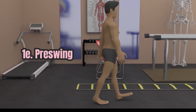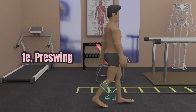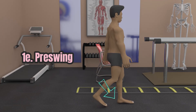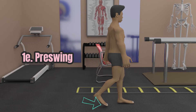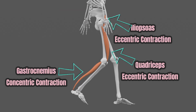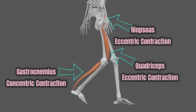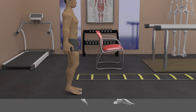The final sub-phase of the stance phase is the pre-swing. This starts when the opposite heel contacts the ground and ends at toe-off. The iliopsoas, quadriceps, and gastrocnemius contract the same as in the terminal stance.